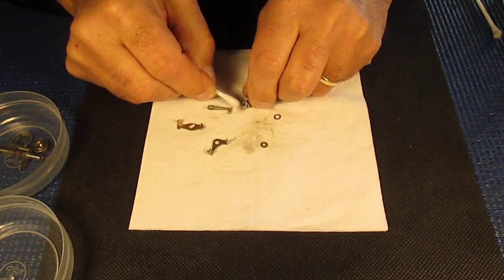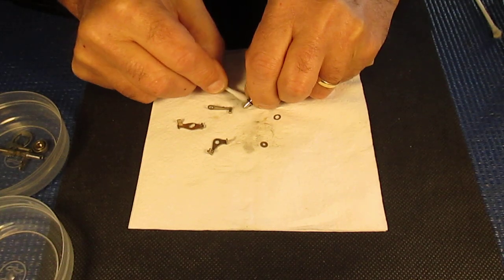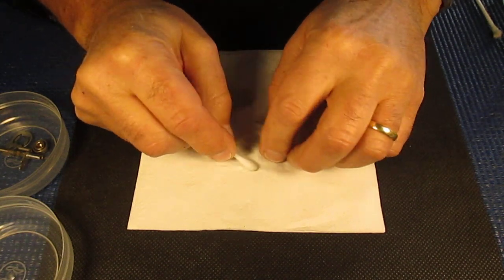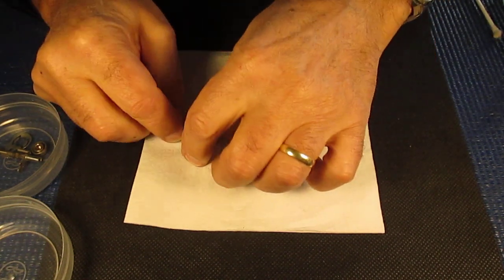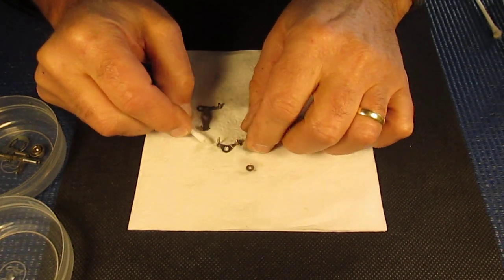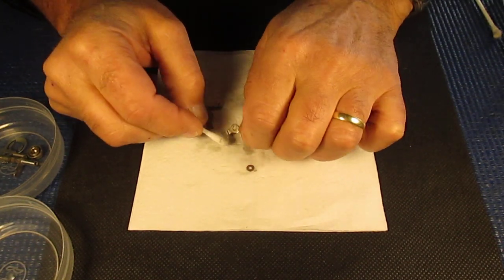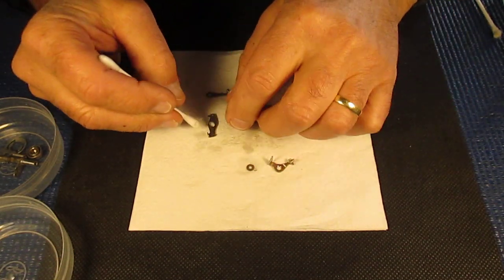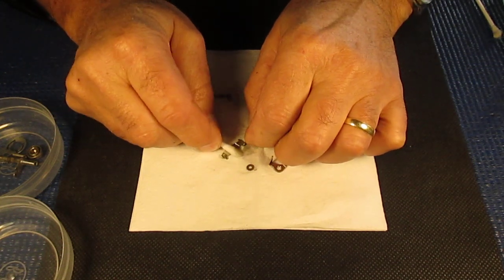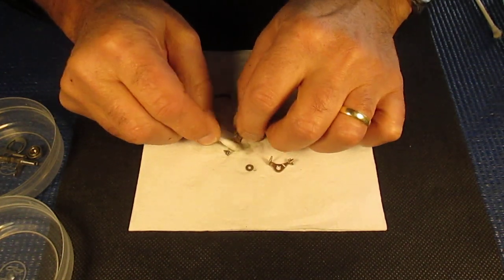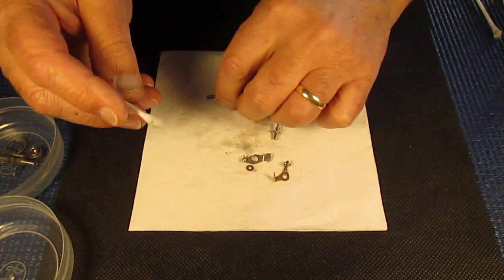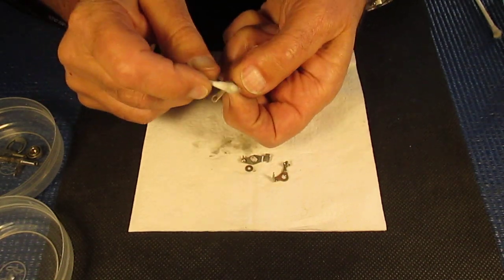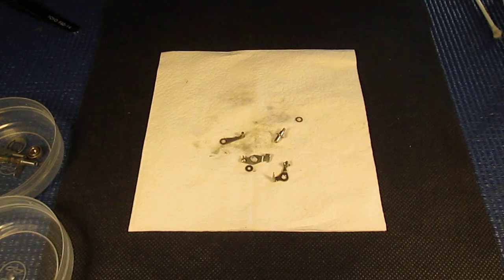All right, first the fixing post, the spacing washers, you have two washers. This piece blocks the shutter release from, well actually the shutter release when it hits that it unlocks the film advance.